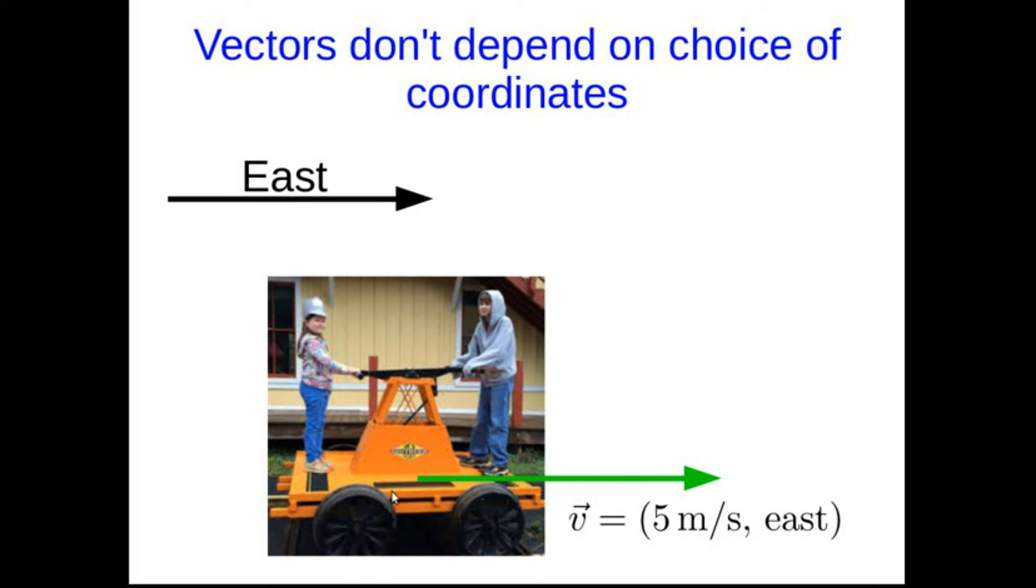And you're on one of these railway hand carts, and you're going east at 5 meters per second. So anyone would agree your velocity vector is 5 meters per second east. But you too may decide to define your axes differently. You each define a forward axis and an up axis.